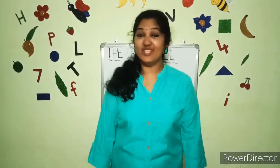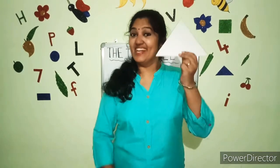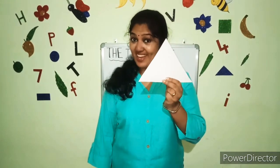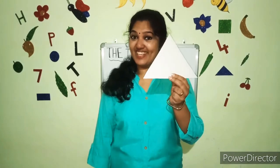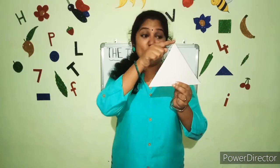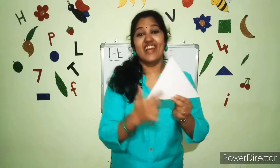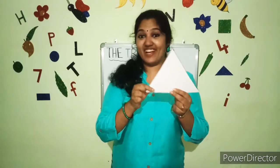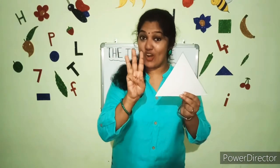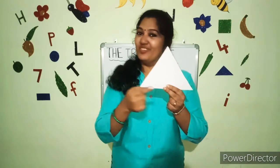Now I'm going to sing a song for you — the song of the triangle. This is a triangle. What shape is this? This is a triangle. It has three sides: one, two, three. This is a triangle. It has three corners: one, two, three.